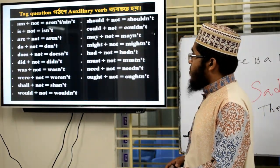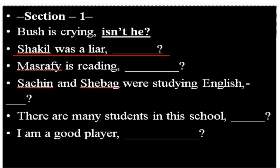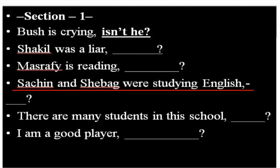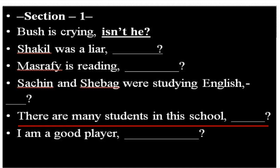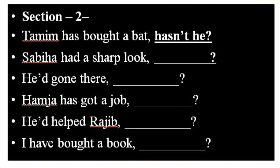Now let's do some exercises. Section one — one sentence is done for you: 'Bush is crying — isn't she?' Now solve the others: 'Shaquille was a liar'; 'Mashafi is reading'; 'Sachin and Shavak were studying English'; 'There are many students in this school'; and 'I am a good player.' Please solve these.